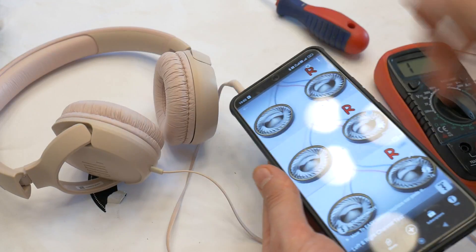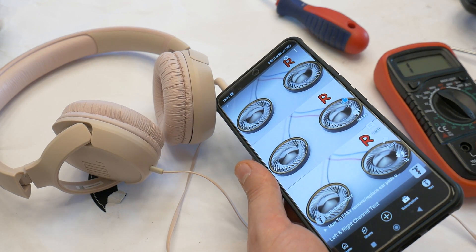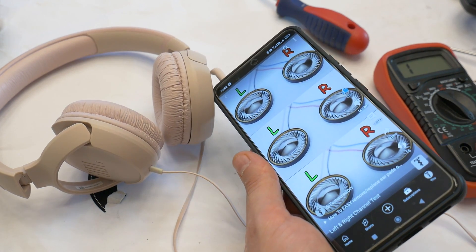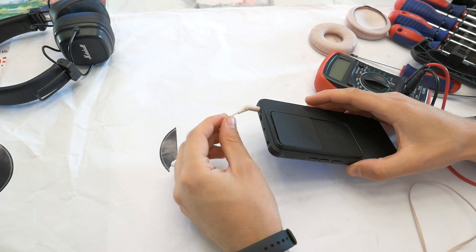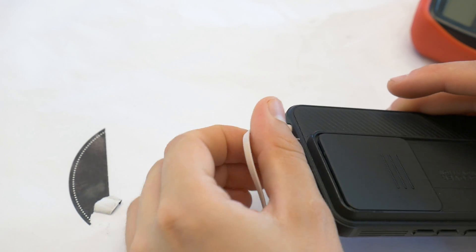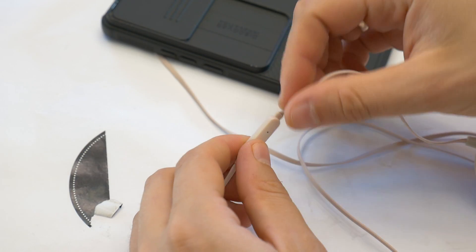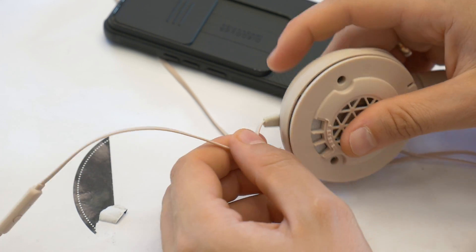To fix the headphones, the first task is to find where the damage is. Turn on music on your phone and while it's playing, jiggle the wire next to the 3.5mm jack, then next to the remote wire, and then close to the headphone case.